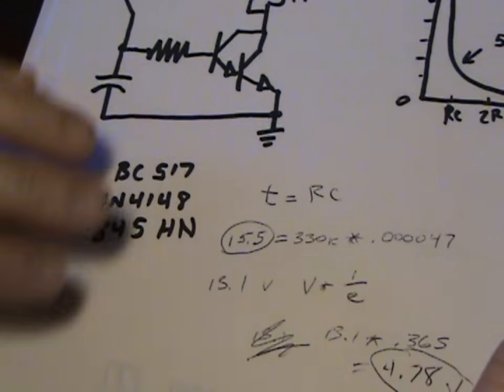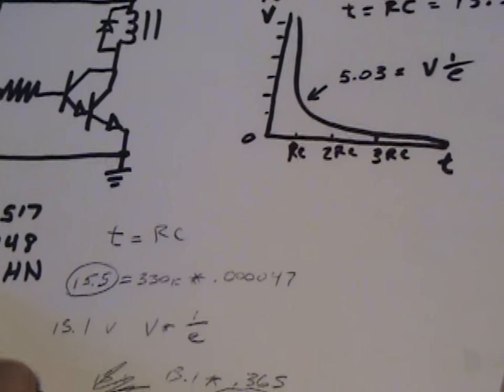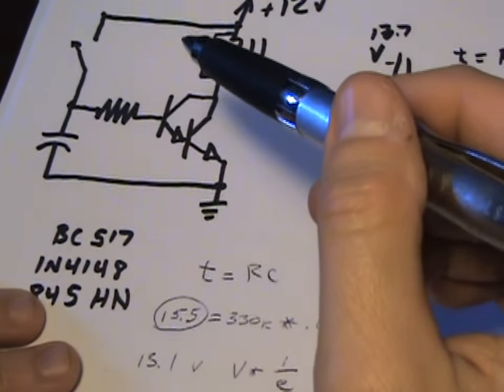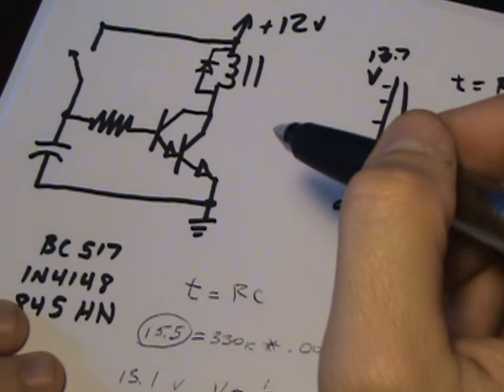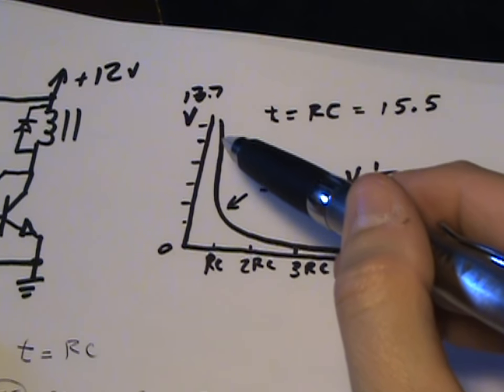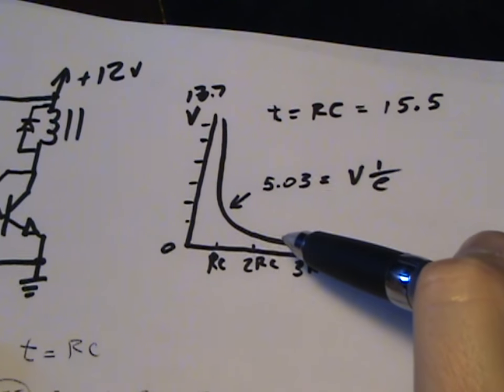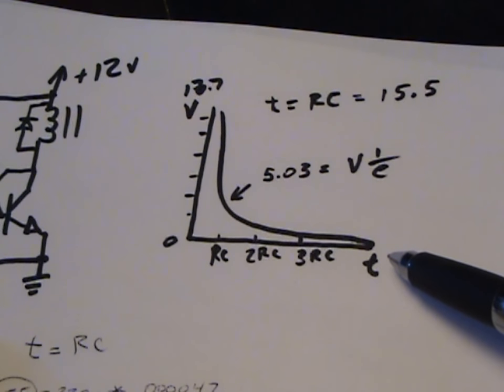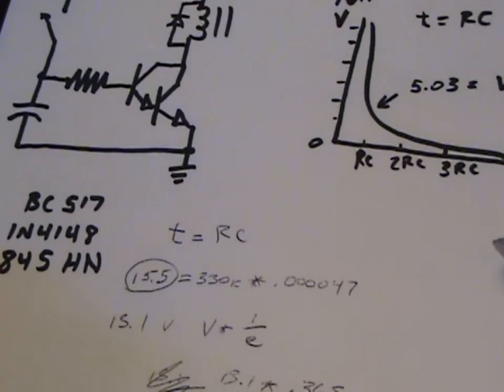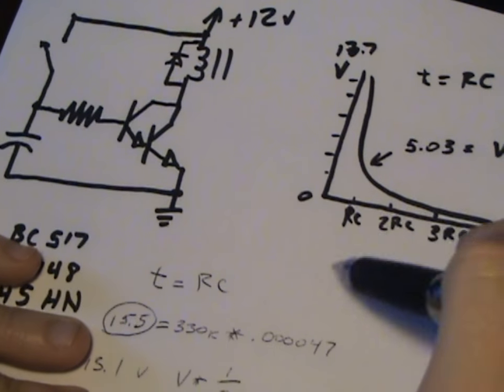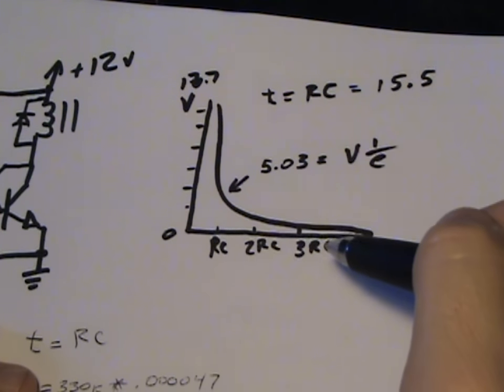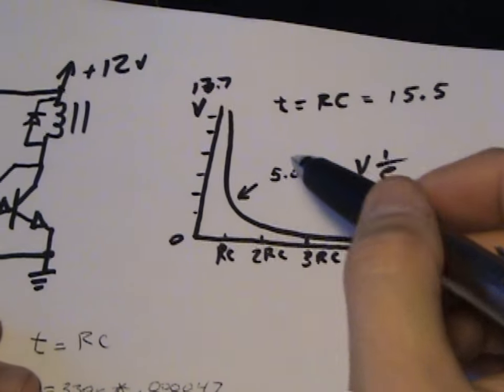Let's say we start at our 13.1 volts. The real formula for figuring that is voltage times 1 over E, the constant E, which comes out somewhere around 36.5%. So 13.1 times 0.365 equals 4.78 volts. So 4.78 volts is the voltage that's going to be left in this capacitor after it is discharged through this resistor for 15.5 seconds. That is one time constant. And so here's the trouble with this. The discharge rate of this capacitor through a resistor isn't linear. It has a curve.